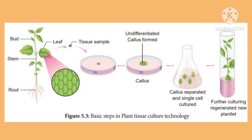In the tissue culture method, the plant tissue is grown in a medium containing all the nutrients. The explant becomes an undifferentiated, unorganized tissue called callus. With plant hormonal activity, the callus is separated into plantlets, which upon further culturing regenerate new plantlets.